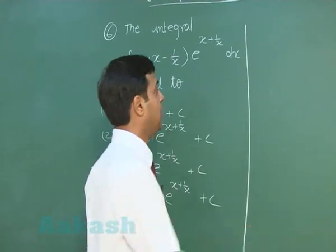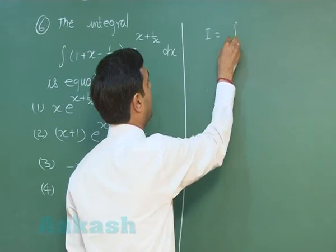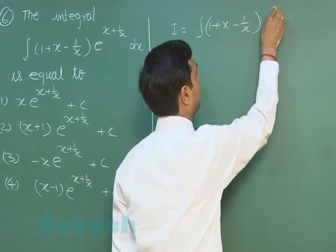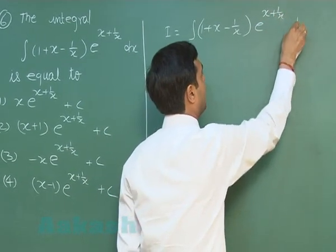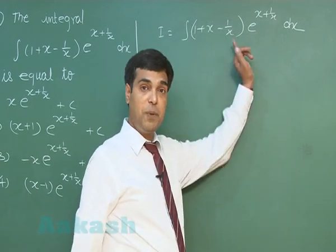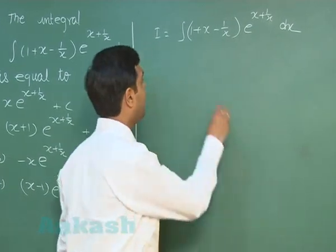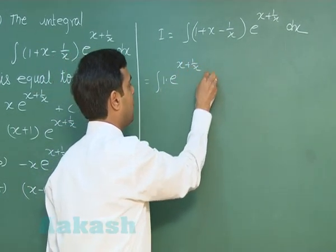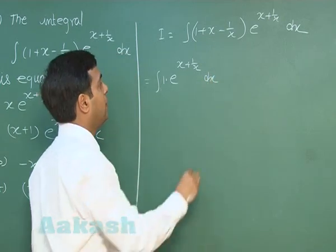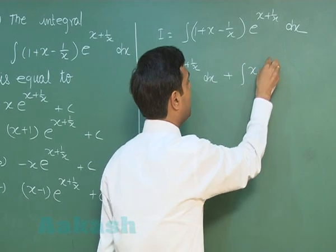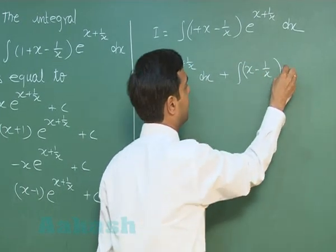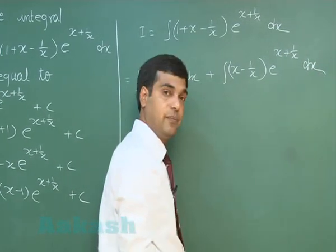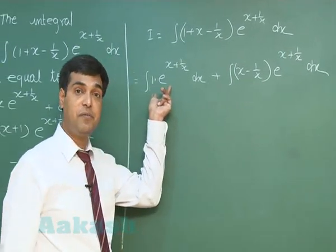Let us evaluate the given integral: (1 + x minus 1/x) times e to the power (x + 1/x) dx. We can rewrite it as the sum of two integrals: first, 1 times e^(x + 1/x) dx; and second, (x minus 1/x) times e^(x + 1/x) dx. We apply integration by parts on the first integral.